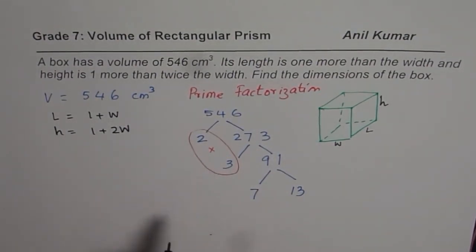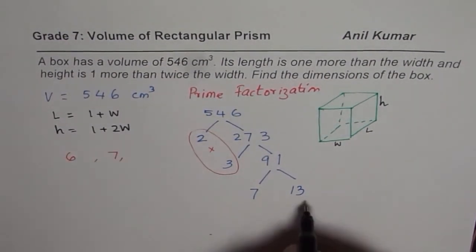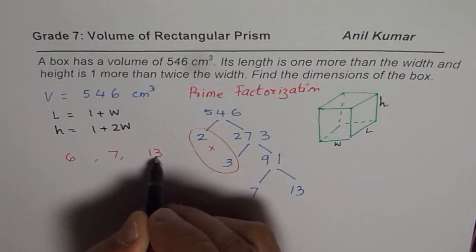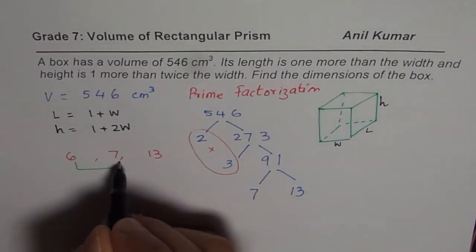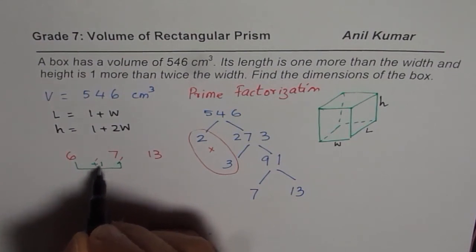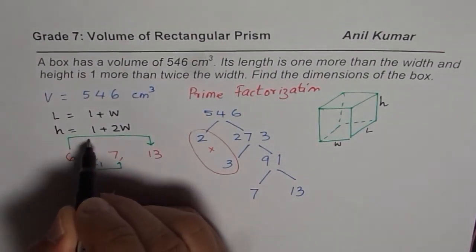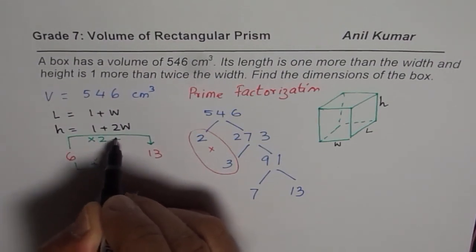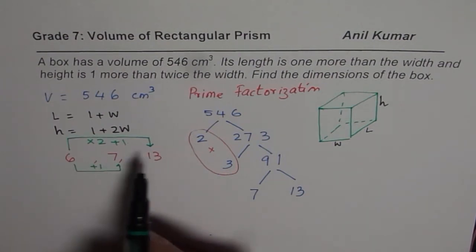So the numbers are 6, 7, and 13. So as you can see, from 6 to 7, I can get by plus 1. And from 6 to 13, I can get by times 2 plus 1. 6 times 2 is 12, 12 plus 1 is 13. It works.